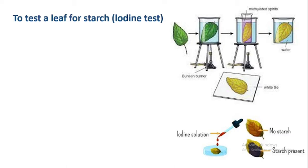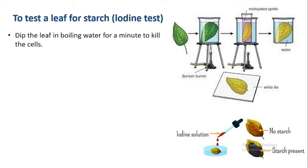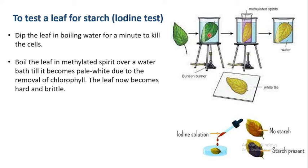Now let's do the iodine test — a test to check whether starch is present in a leaf or not. First, dip the leaf in boiling water for a minute to kill the cells. Then boil the leaf in methylated spirit over a water bath until it becomes pale white due to the removal of chlorophyll. The leaf now becomes hard and brittle.